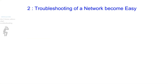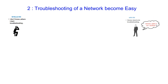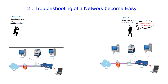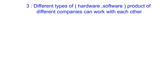Troubleshooting of the network becomes easy. Without OSI, it is difficult to know how to stop troubleshooting. But with OSI, it helps you identify where the problem is and where you have to stop troubleshooting.